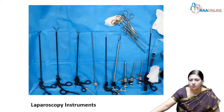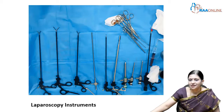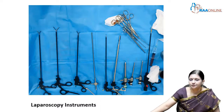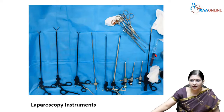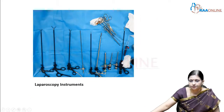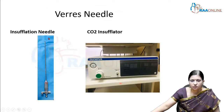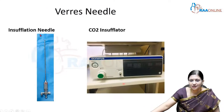These are the trocars of 10mm, 5mm, and another 5mm trocar to introduce the instruments. This is a bipolar, also called the cautery or diathermy. We also have a fluid-filled syringe to do the bubble test after the insertion of the Veress needle. So what is a Veress needle?